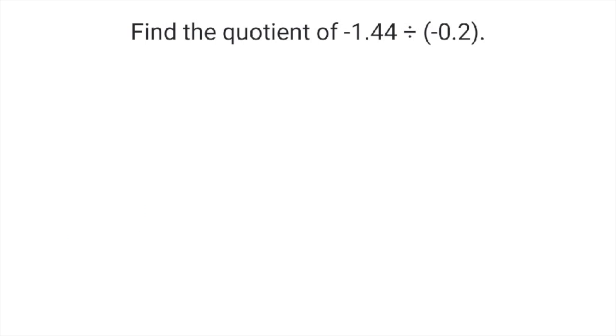Find the quotient of -1.44 ÷ (-0.2). Let's start by estimating, and let's round this to -1 ÷ (-0.2). 0.2 goes into 1 five whole times, and negative divided by negative is positive, so the answer is positive 5.